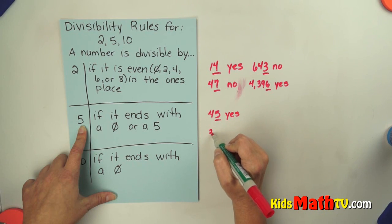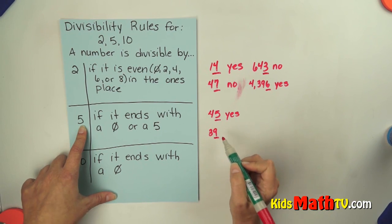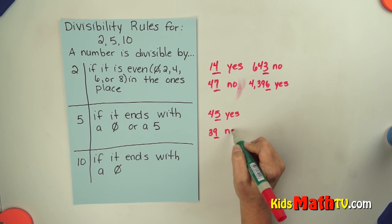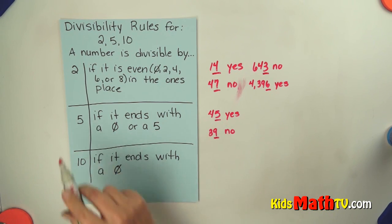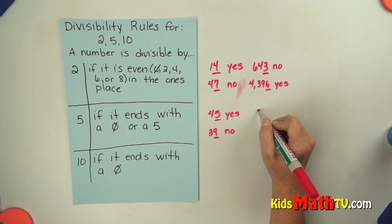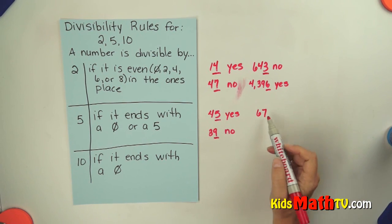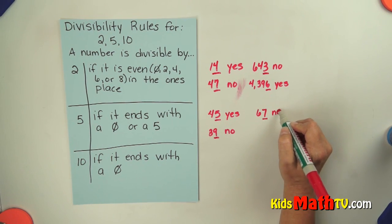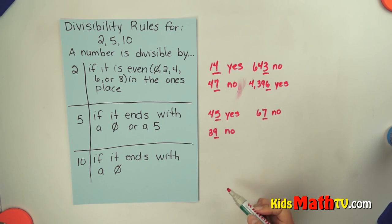Another number. How about 39? I look in the ones place. Does it end with a 0 or a 5? No, it does not, so 39 will not divide by 5 evenly. How about the number 67? The 7 is in the ones place. It's not a 0 or a 5, so no, 67 will not divide by 5 evenly.